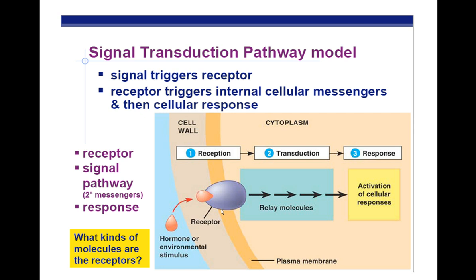Hormones or environmental stimuli — these are sometimes proteins, or could be other molecules, but many times they're proteins. These proteins will bind to a protein in the cell membrane of the plant and cause a chemical reaction that will result in a bunch of relay molecules that will transduce or carry the signal to the nucleus, where transcription and translation will occur and proteins will be made. Then there'll be some kind of response, whether that's greening or growing one side of the cell longer than the other.